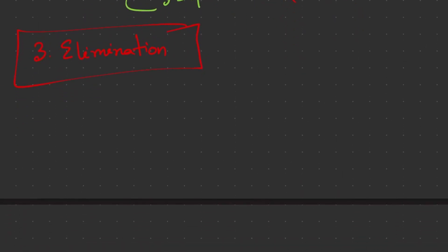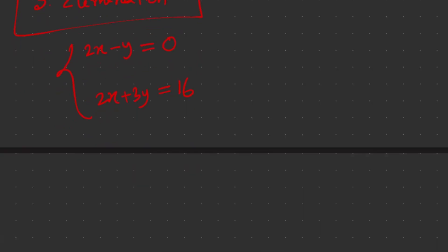In the elimination method, we add or subtract the two equations to eliminate one variable. This is particularly efficient when the coefficients of one variable are the same or can be made the same. Our equations are 2x minus y equals 0 and 2x plus 3y equals 16. We can see the first terms are the same, so if we subtract equation 2 from equation 1, the x terms will be eliminated.